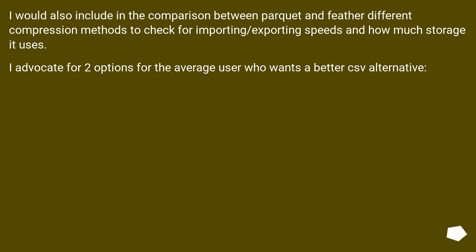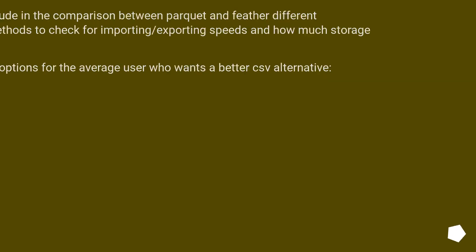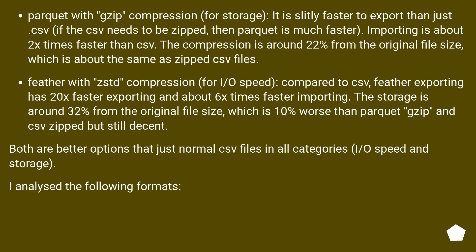I would also include in the comparison between Parquet and Feather different compression methods to check for import/export speeds and how much storage each uses. I advocate for two options for the average user who wants a better CSV alternative. First: Parquet with ZIP compression for storage. It is slightly faster to export than plain CSV. If the CSV needs to be zipped, then Parquet is much faster. Importing is about 2x faster than CSV, and compression is around 22% of the original file size, about the same as zipped CSV.